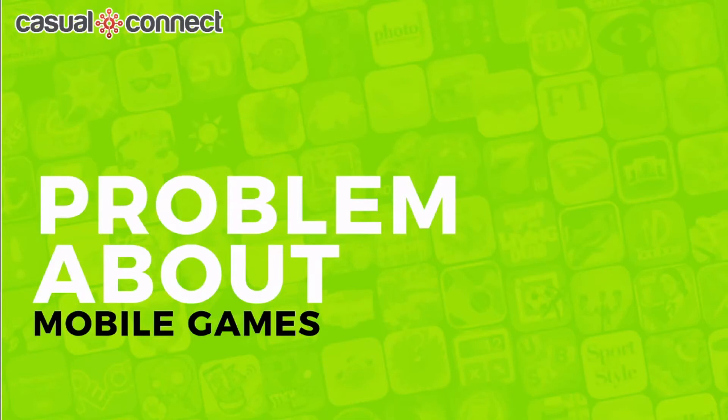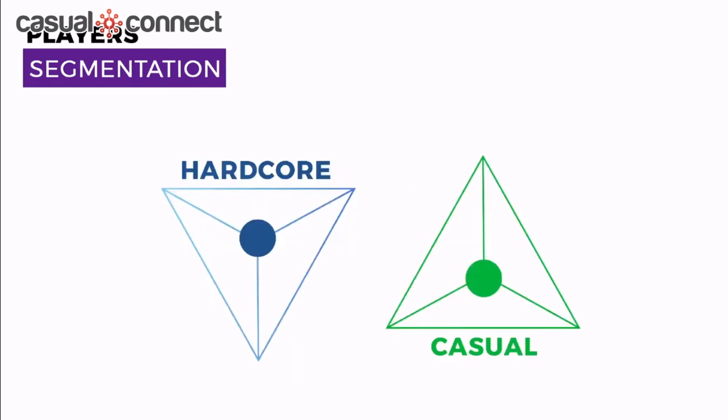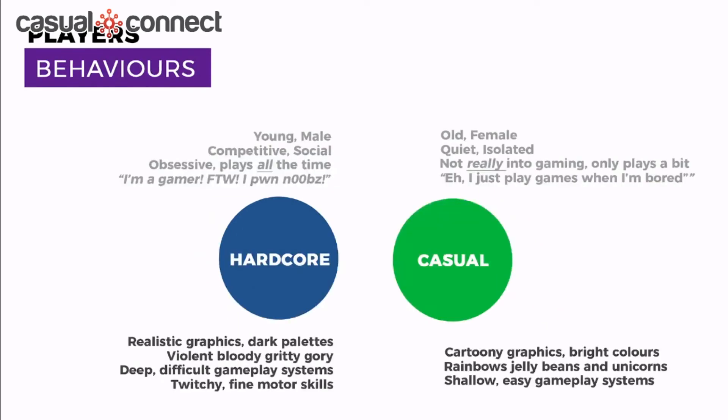The problem with mobile games is there are different age segments and different gender segments. We don't always know who we're developing the game for or how to help them. There used to be two categories: hardcore and casual. Casual games have cartoony graphics, cute art, and a light feel. Hardcore games are realistic, dark palettes, violent. Now we're getting into more detail with sub-categories like hyper-casual, midcore, and more.